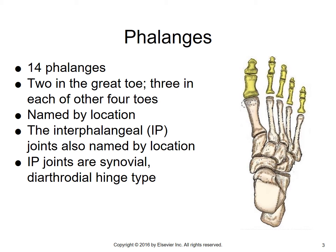The joints in between are termed the interphalangeal joints, and similar to how we named them in the hand, we name them the same in the foot. We've got the interphalangeal joint of the great or first toe, the proximal interphalangeal joint of the second toe, the distal interphalangeal joint of the second toe, and correspondingly the same for the other toes — where you have the proximal interphalangeal joint and the distal interphalangeal joint.